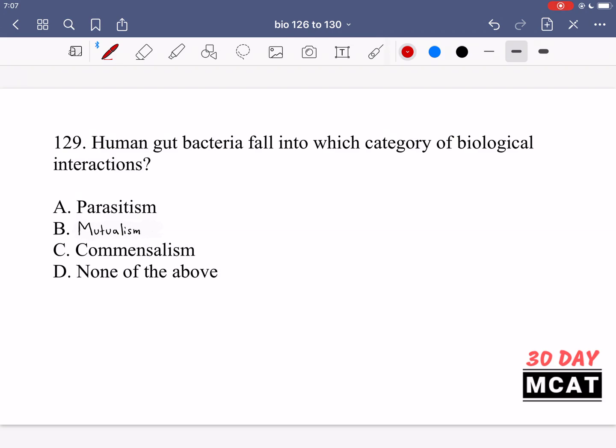In question 129 it says human gut bacteria fall into which category of biological interactions? So we're talking about our gut bacteria and which category. We're talking about biological interactions, symbiosis in this case. This is when we have interaction between two organisms. One of them benefits and then the other one can either benefit in a positive sense, or it can be harmed so there's a negative effect, or there can be a neutral effect meaning it doesn't really get affected. One organism benefits but the one that it's in a symbiotic relationship with, its host, does not really get either positively or negatively affected. So those are the three types.